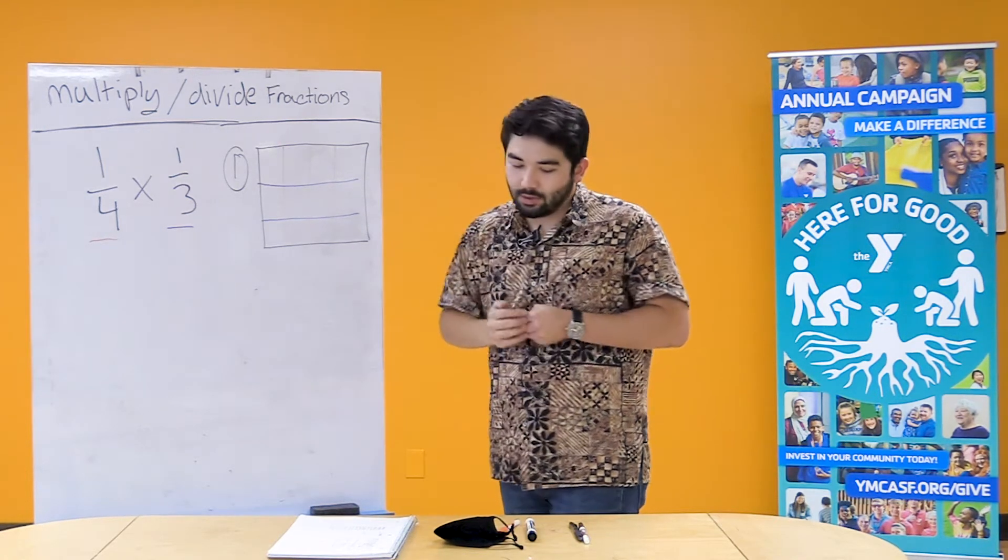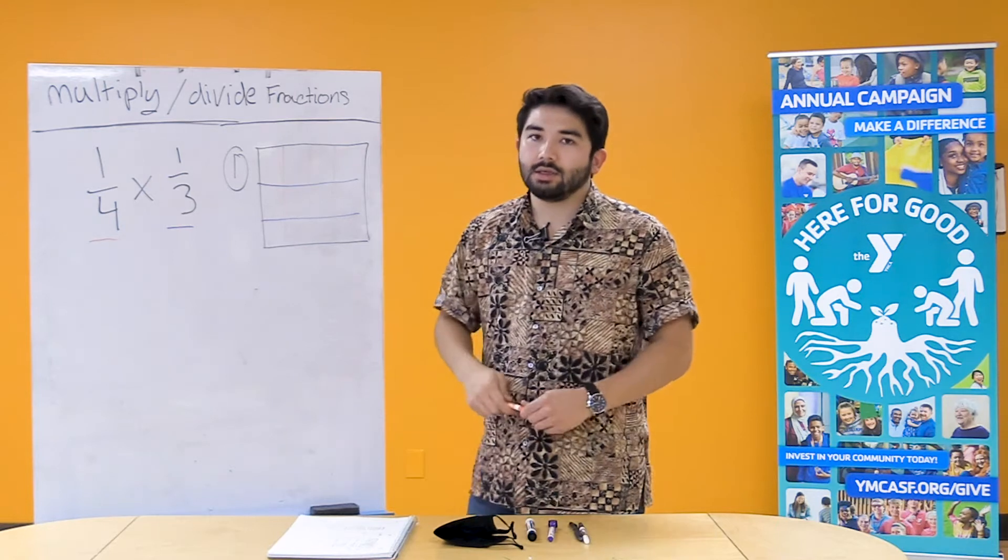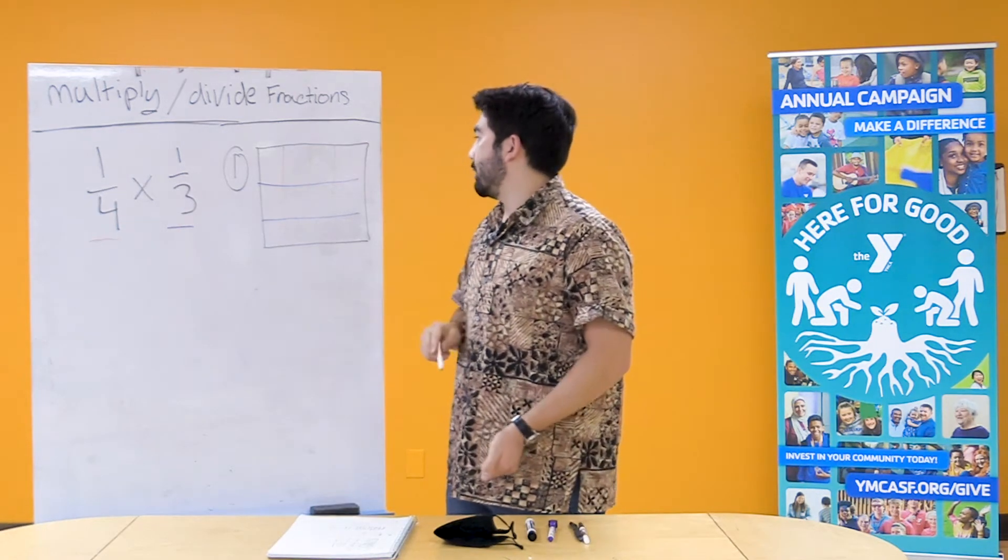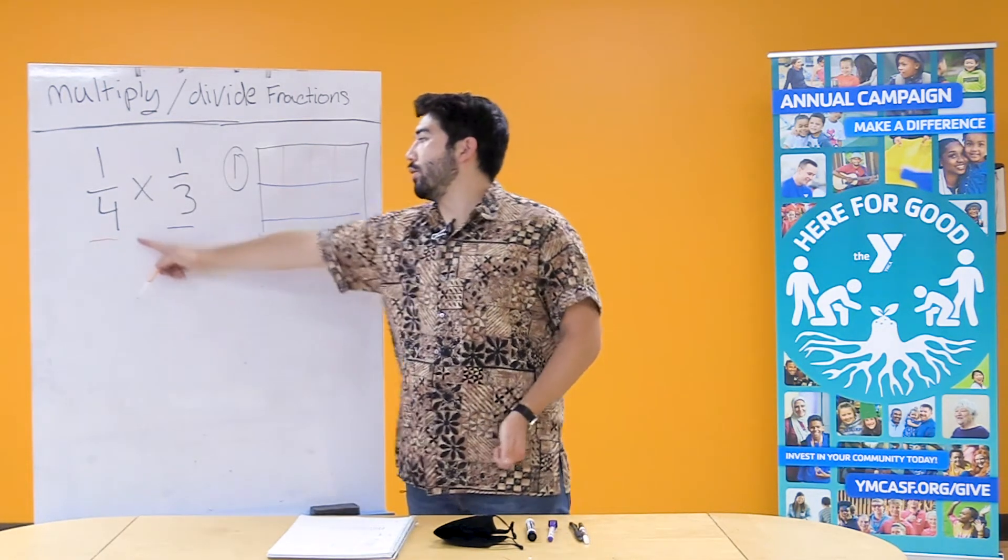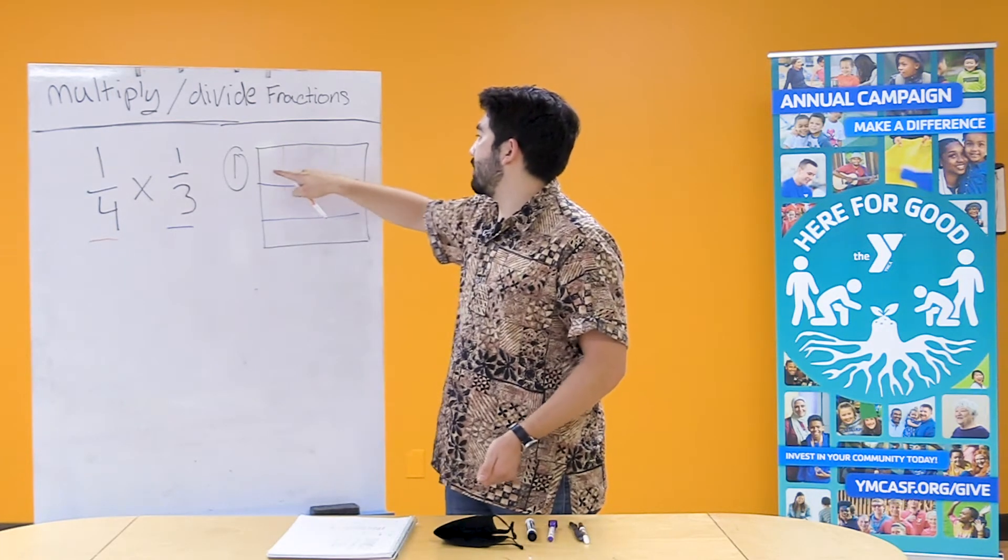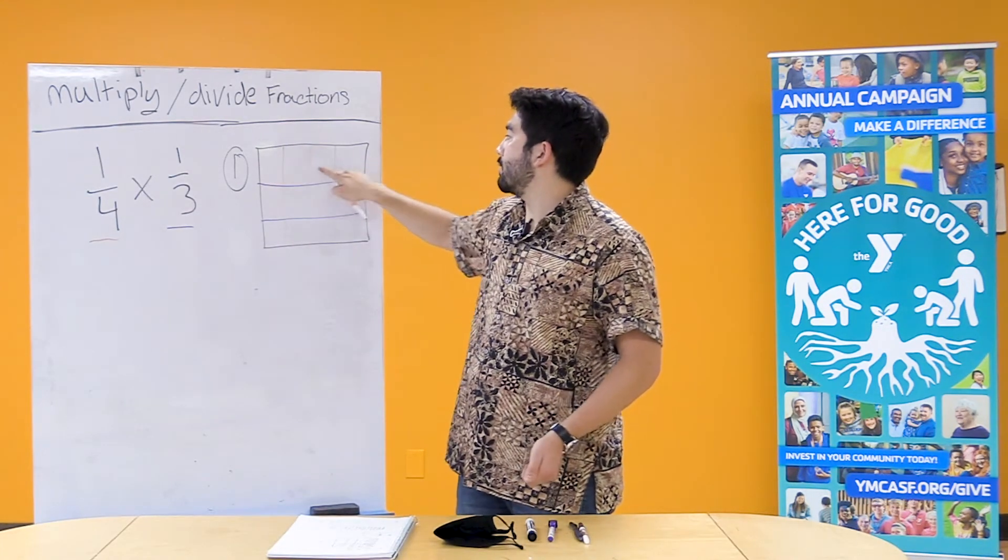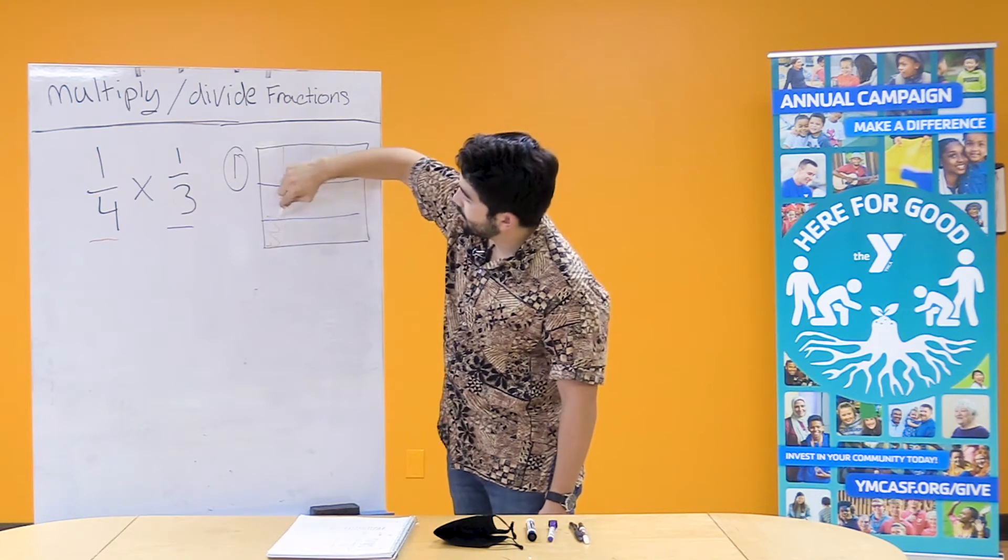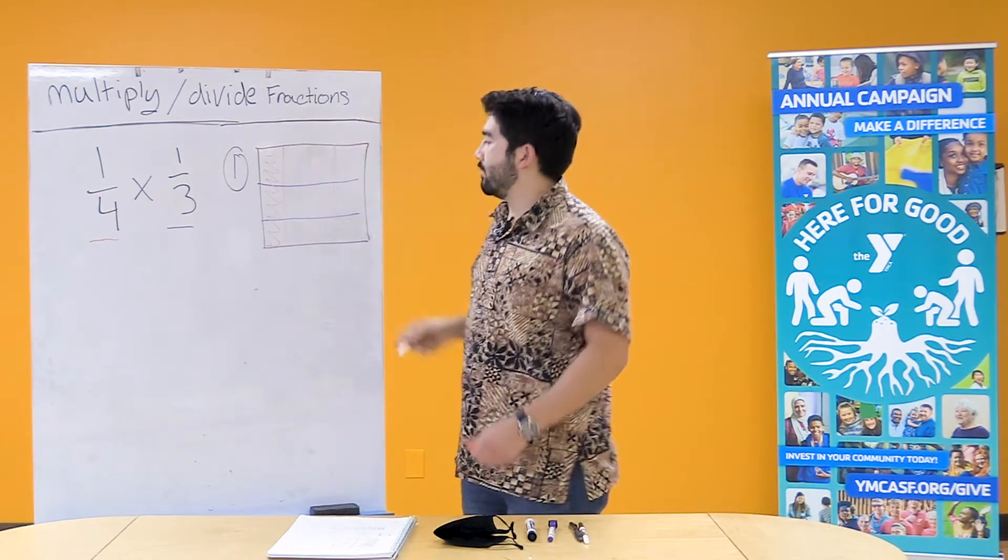So 1, 2, 3. So what I'm gonna do now is take my orange marker which represents 1/4 and I'm gonna shade in 1/4. So I'm gonna make sure to go in our boxes. Here they are 1, 2, 3, 4. I'm gonna shade in one of these four boxes.